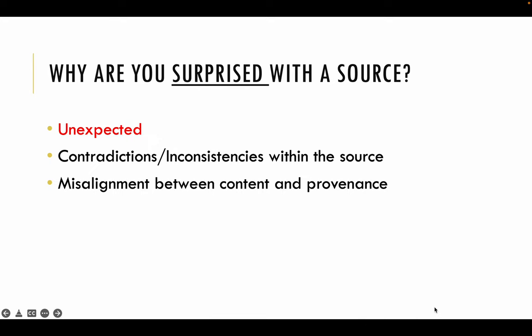For example, if the provenance states that the source-giver is Trump, but the content of Trump's speech is actually singing praises about the Obama administration — because we would definitely not expect Trump to say good things about Obama's rule, about Obama's administration, during all of Obama's time as president — there's a misalignment between content and provenance. Hence, we are surprised.